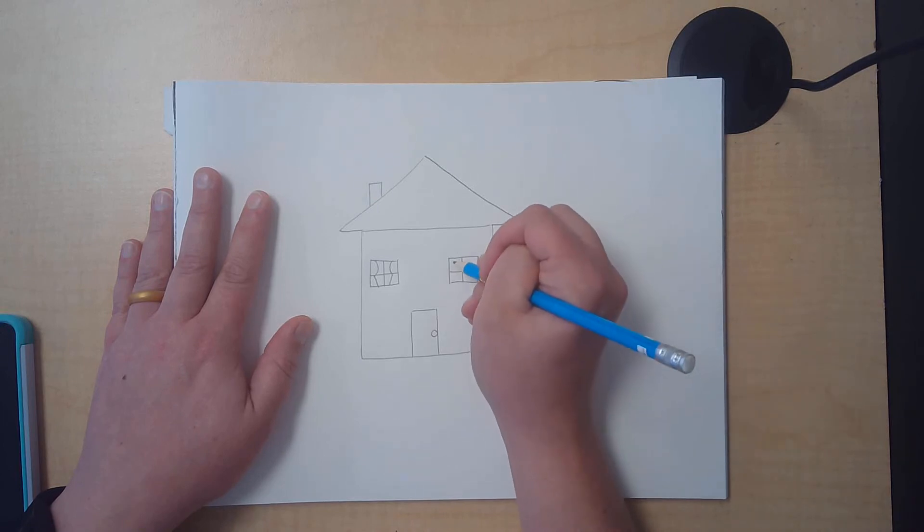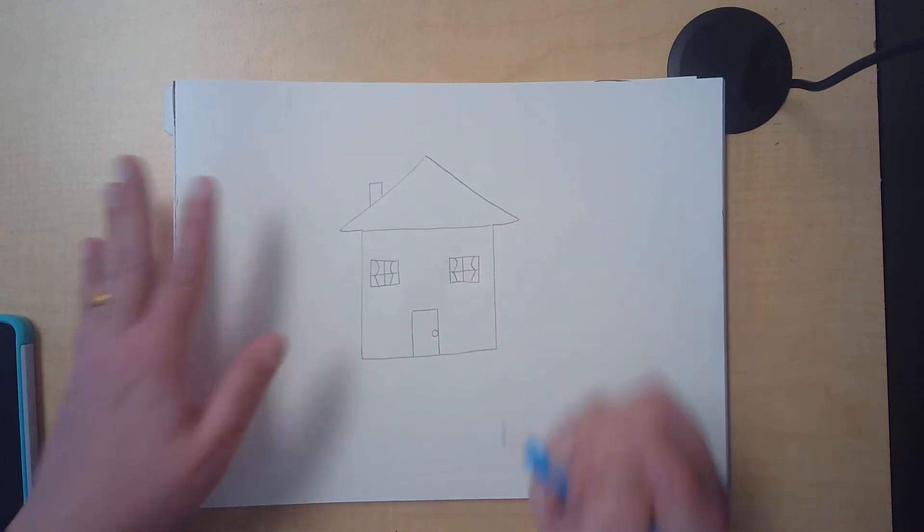Yeah, that looks like some decent little curtains. Curved line and slanty line. Curved line and slanty line. All right.